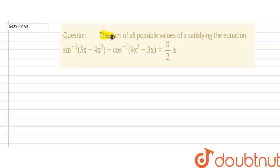In this question, we have given that the sum of all possible values of x satisfying the equation sin⁻¹(3x - 4x³) + cos⁻¹(4x³ - 3x) is equal to π/2.